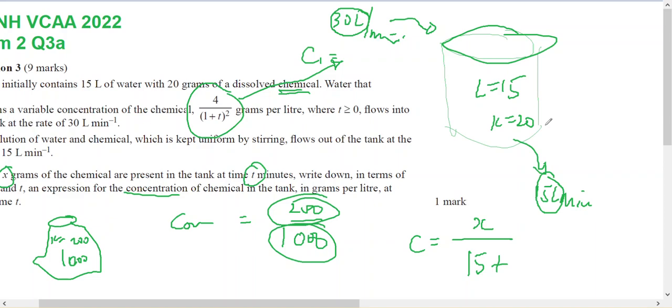So every minute, an extra 15 litres. So 15T will be the volume at any time T. Whatever X is, divided by whatever the litres are.